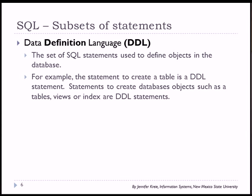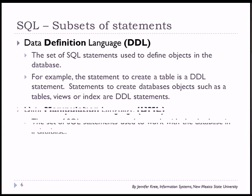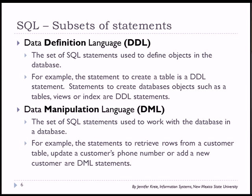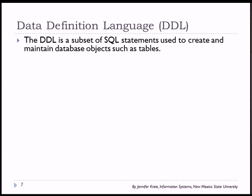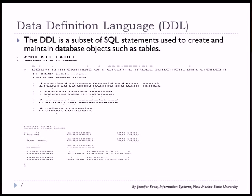SQL can be divided into subsets of statements based on the type of functionality those statements perform in the relational database. We have DDL — Data Definition Language — which is the set of commands that create and define objects within the database. We also have DML, which is what most people think of when they think about SQL, because this is the set of statements used to pull data from a database, add data to a table, or update data in a table. The DDL set of SQL statements is used to create objects such as tables in a database.